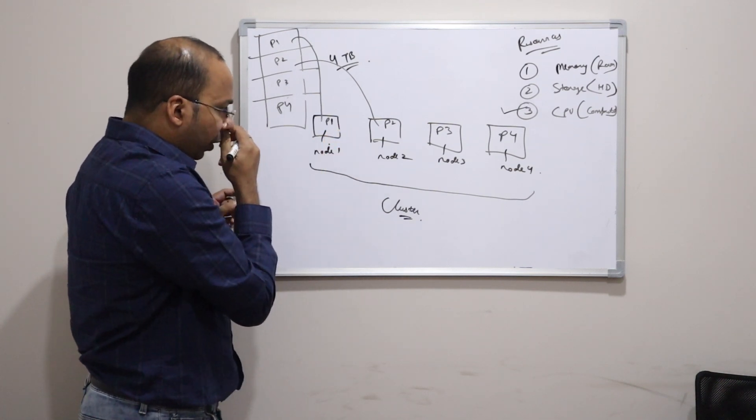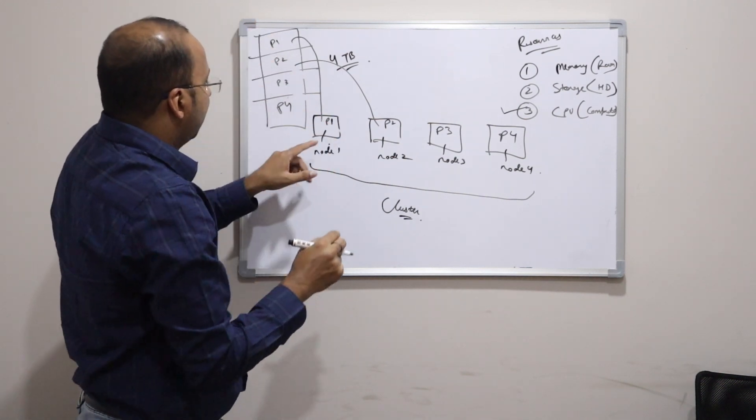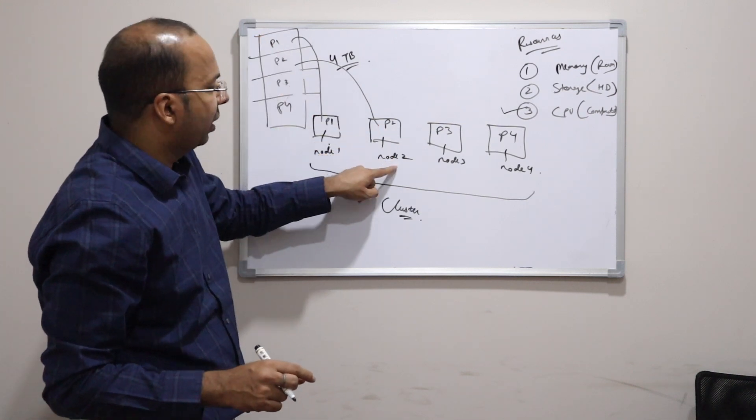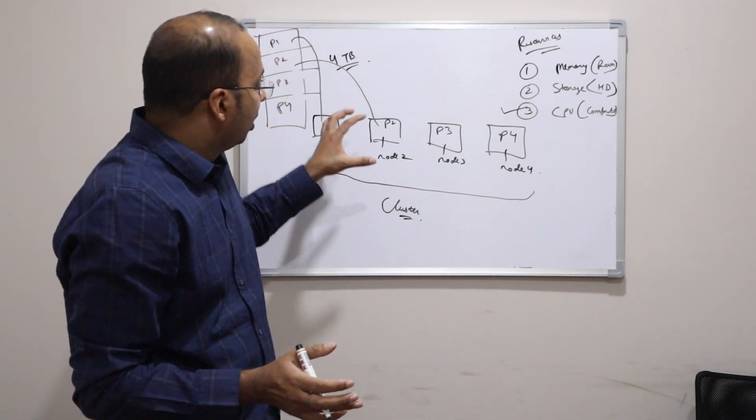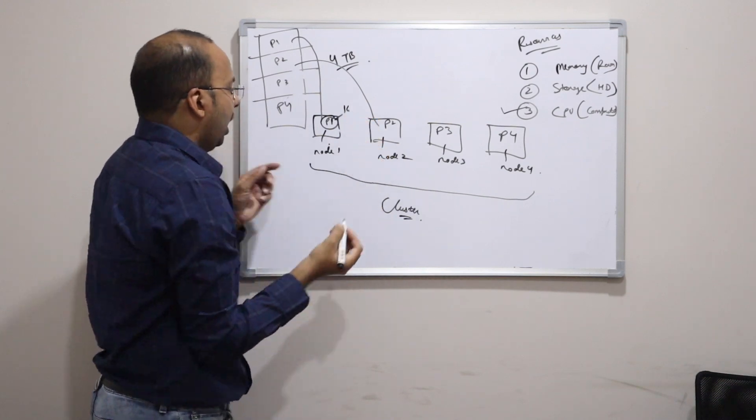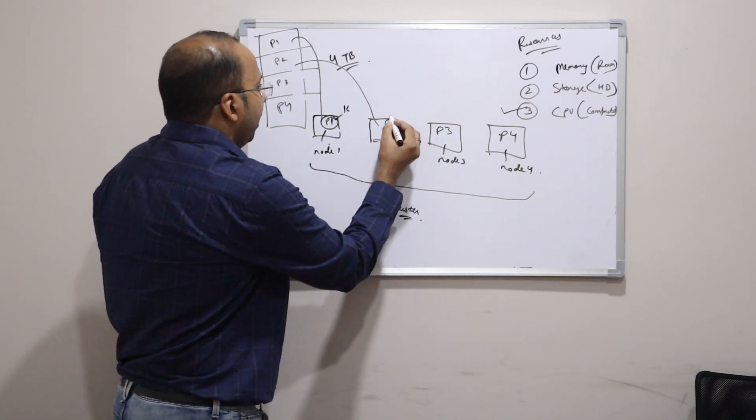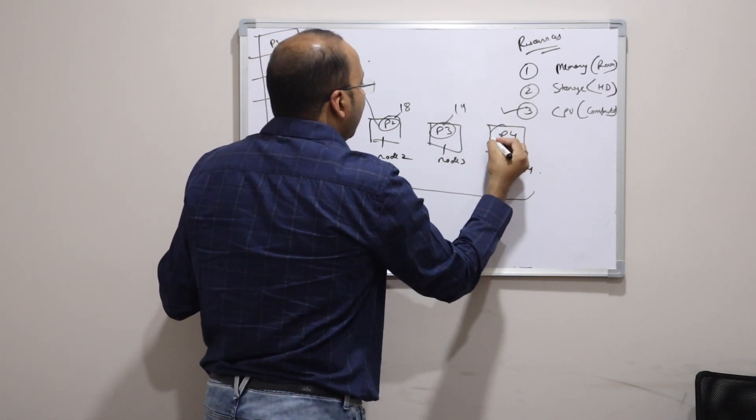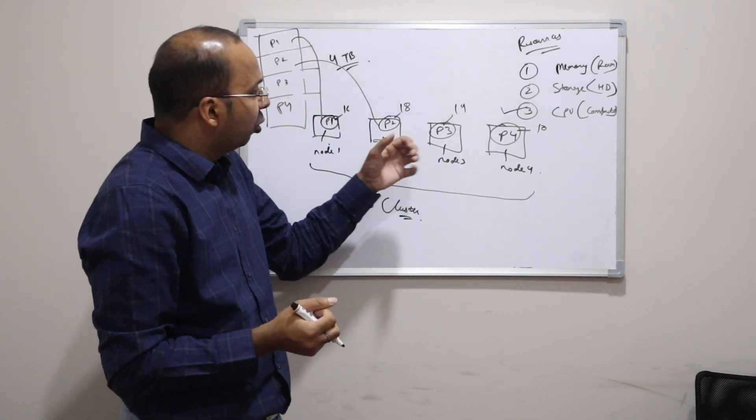So basically what will happen now as part of processing is on this part 1, the processing should happen in node 1. On this part 2 processing should happen in node 2 and likewise. That means all these 4 machines can work in parallel to get that now how many words are there in this. Let's say there are 16 words. Ideally we are saying 1 TB it should be much more but for simplicity I wrote 16. In P2 let's say there are 18 words. In P3 let's say there are 14 words. And in P4 let's say there are 10 words. So each of machine worked in parallel to get this.